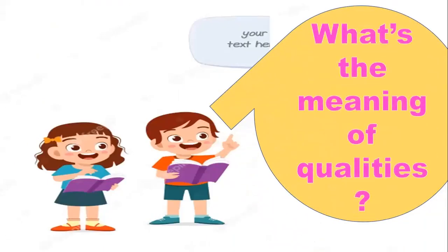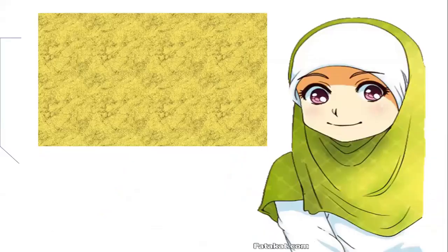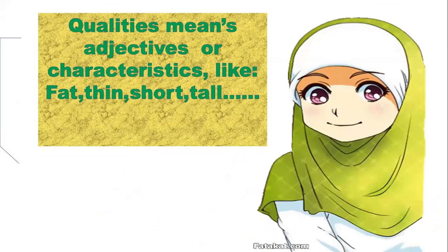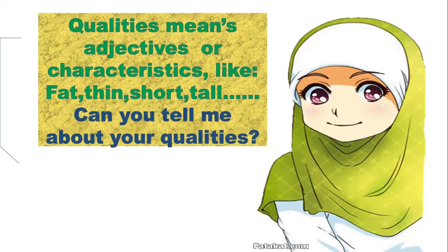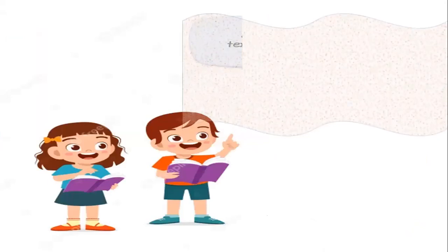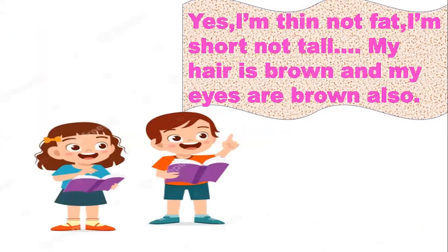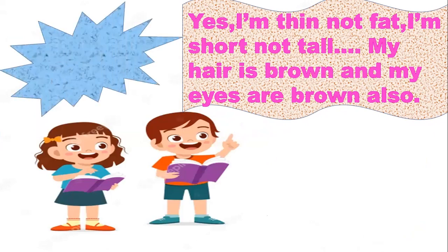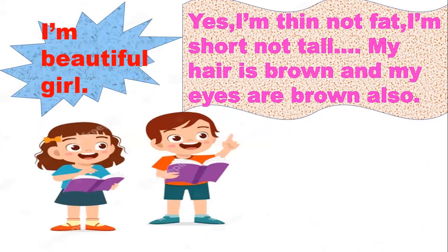What is the meaning of qualities? Qualities means adjectives or characteristics, like fat, thin, short, tall. Can you tell me about your qualities? Yes, I am thin, not fat. I am short, not tall. My hair is brown and my eyes are brown also. I am a beautiful girl.